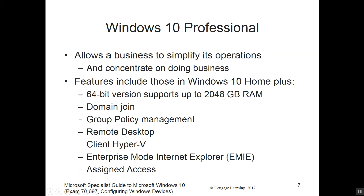Win 10 Professional allows the business to simplify its operations and concentrate on doing business. It comes with everything in Win 10 Home, but also has a 64-bit version that supports up to 2,048 GB of RAM, domain join, group policy management, remote desktop, client Hyper-V, Enterprise Mode Internet Explorer (EMIE), and assigned access.